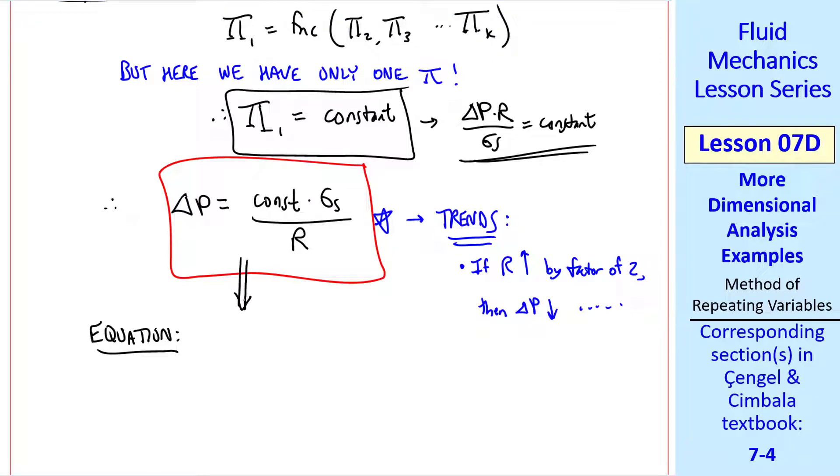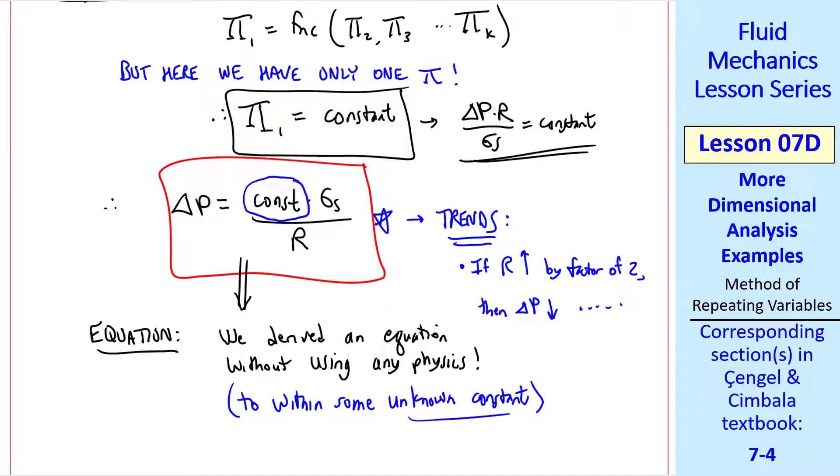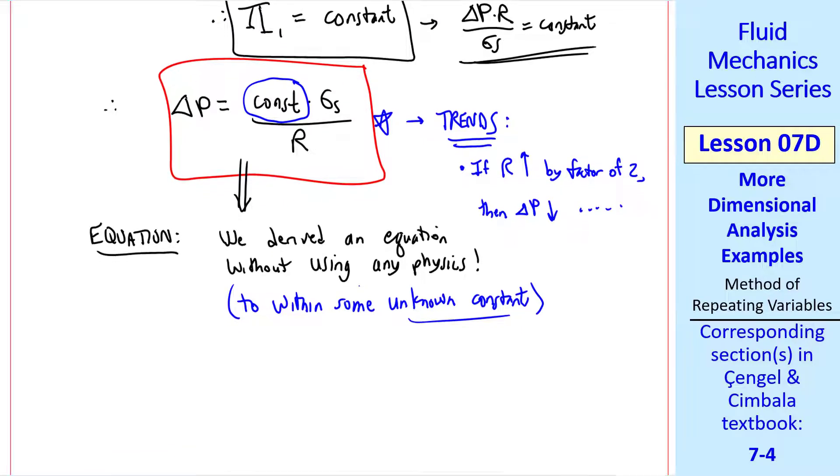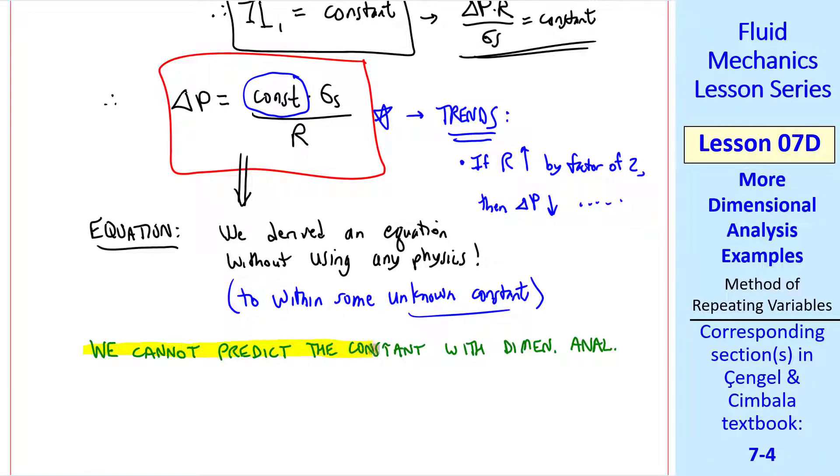Let's examine the equation we have. I mentioned that sometimes dimensional analysis can actually give us an equation. We derive this equation without using any physics. The only thing we knew at the beginning were the dimensions of these variables. Yet we have an equation as a result. Note that this equation is to within some unknown constant. There's no way we can get this constant from dimensional analysis. But still it's pretty amazing that we can get this result without knowing any physics at all. I'll write this out formally. We cannot predict the constant with dimensional analysis. So this is as far as we can get.